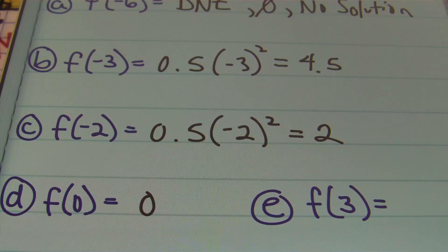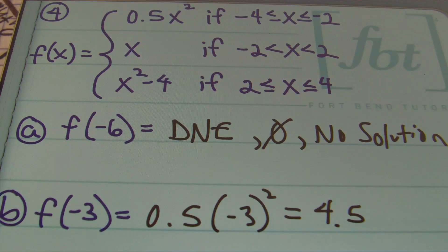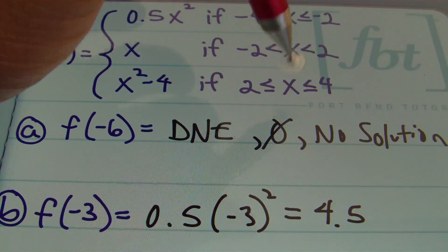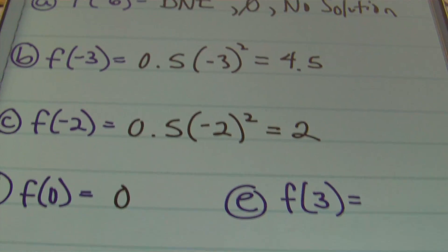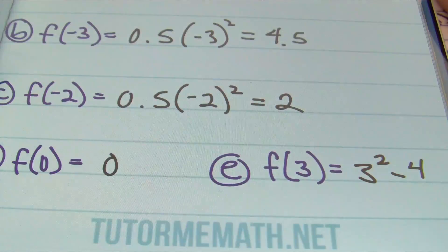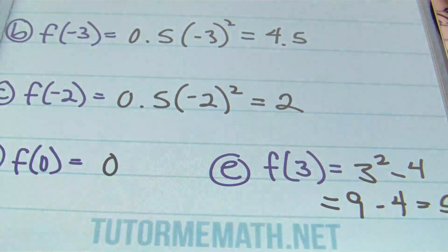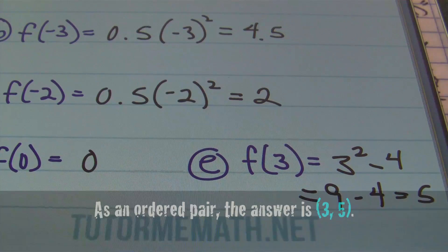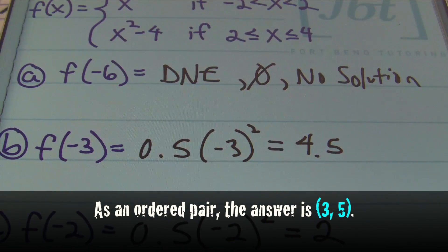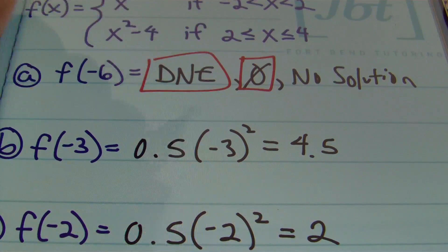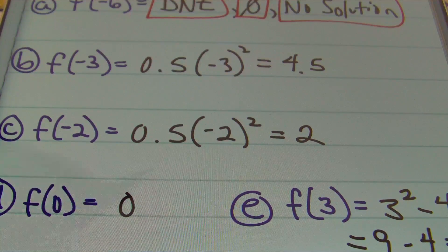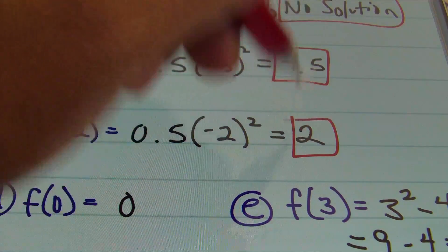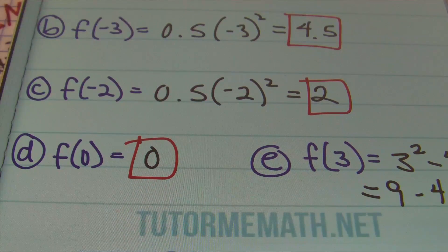For part e, x equals three. Three lies in the interval between two and four, so we use the third part of the function: x squared minus four. Replacing x with three: three squared minus four equals nine minus four, which is five. So the answers are: part a — no solution; part b — four point five; part c — two; part d — zero; part e — five.